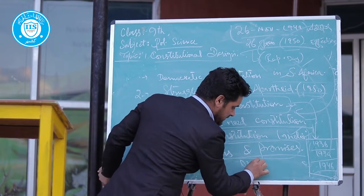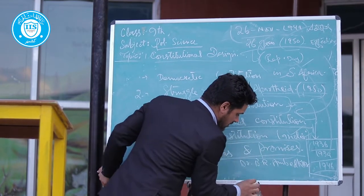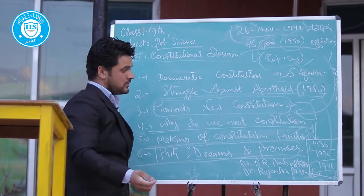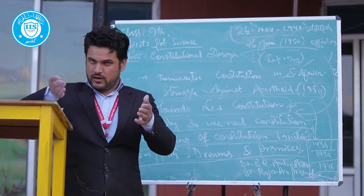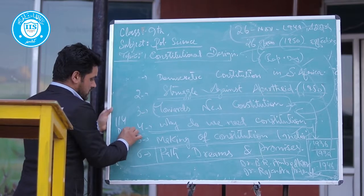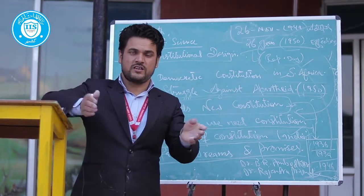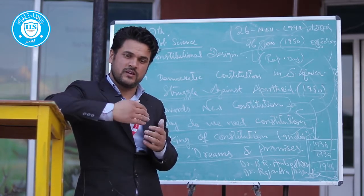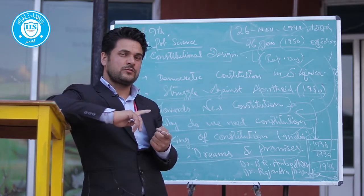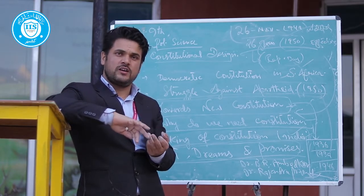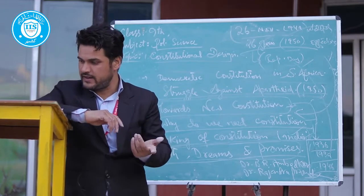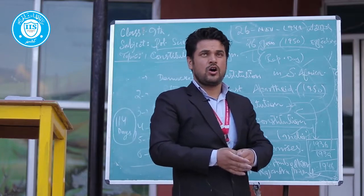Dr. Bhimrao Ambedkar was the chairman of the drafting committee, and Dr. Rajendra Prasad was the head of the Constituent Assembly, along with the rest of the members. How much time did it take to draft this constitution? It took 114 days of reading and deliberation. Many countries' written constitutions were read and studied — approximately from Australia, Canada, Ireland, USA, and other countries. After reading them word by word, the documents were prepared and the constitution was drafted clause by clause.